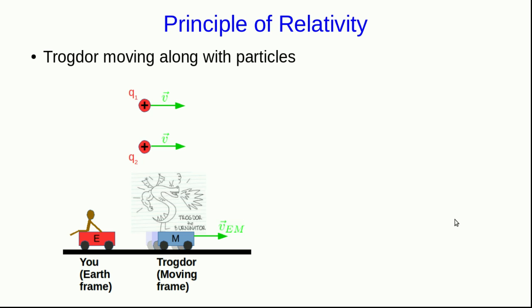I'm going to finish this unit by raising an issue which we simply cannot resolve in this course, but which is very interesting, and I think you should be aware of it. So let's say you are in the Earth frame. You're stationary relative to the Earth. And you're observing two charged particles which are moving along at the same velocity.